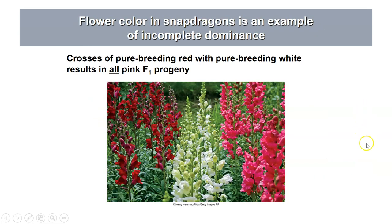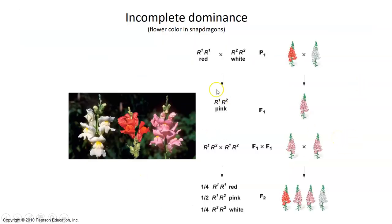An example of incomplete dominance is snapdragons. One homozygote produces white flowers and another homozygote for a different allele produces red flowers. Both are pure breeding. If you cross them, you get a heterozygote with flower color intermediate between red and white — pink flowers. Homozygous for R2 is white; homozygous for R1 is red — they're alleles of the same gene. If you cross pure-breeding red to pure-breeding white, you get a heterozygote with one allele each, showing the pink intermediate phenotype.